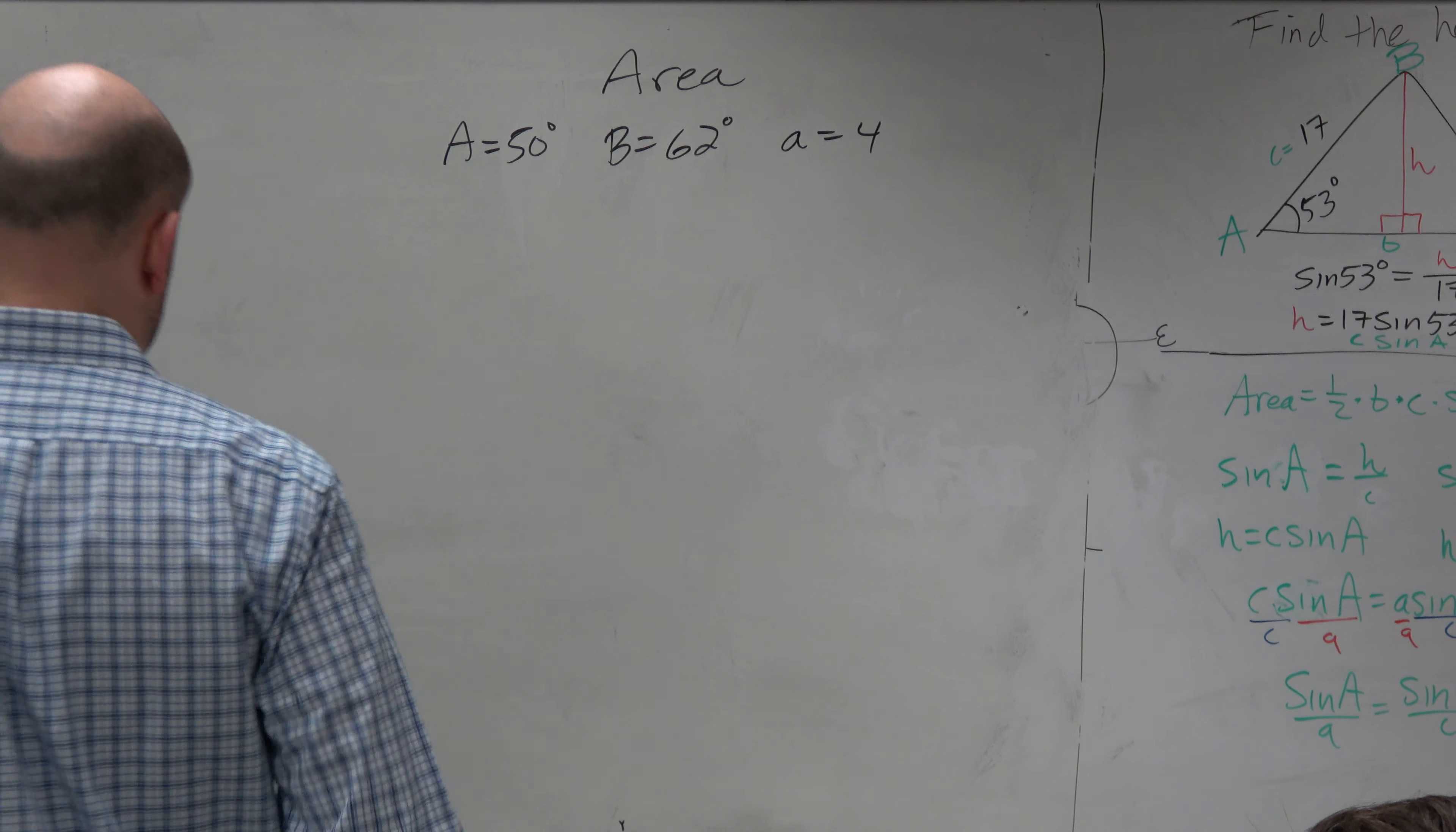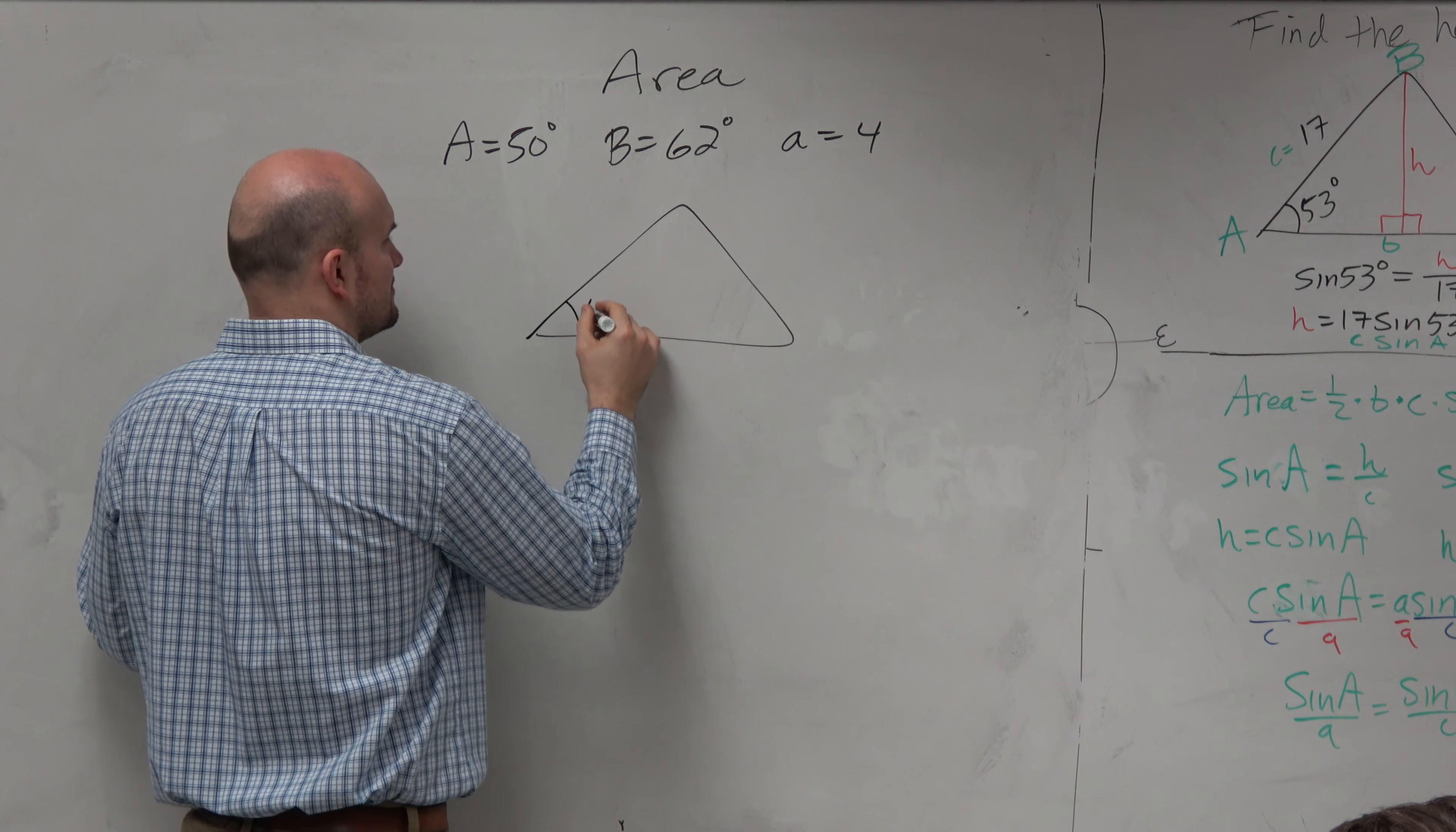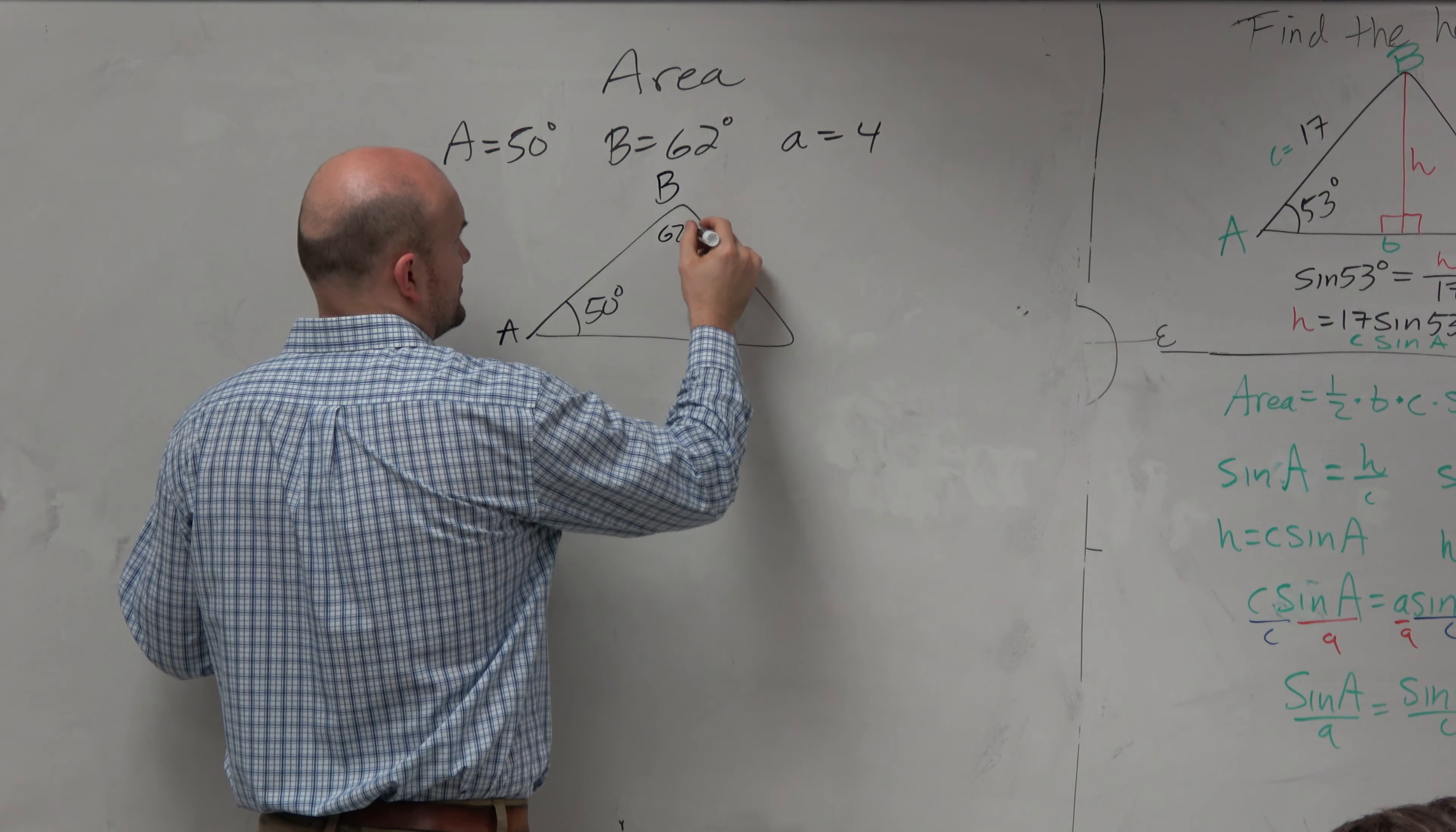What I would do, guys, is I would draw this triangle. And let's just make here B 62 degrees, and then A equals 4.